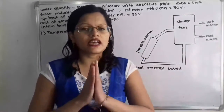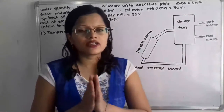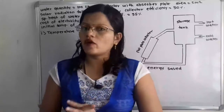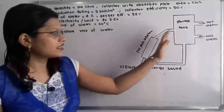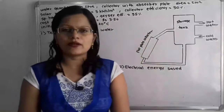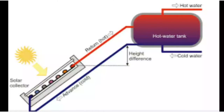Now let us first understand what is the thermosiphon solar water heating system. If we observe this diagram, here there are two main parts: the storage tank and the flat plate collector. The cold water enters at the storage tank and then it enters from the bottom of this solar flat plate collector.